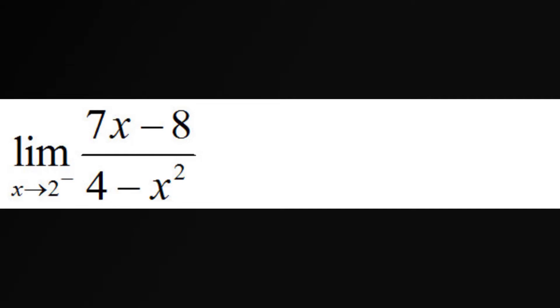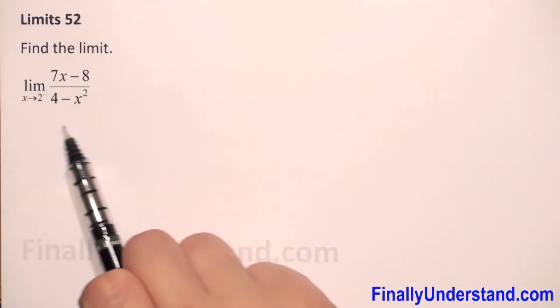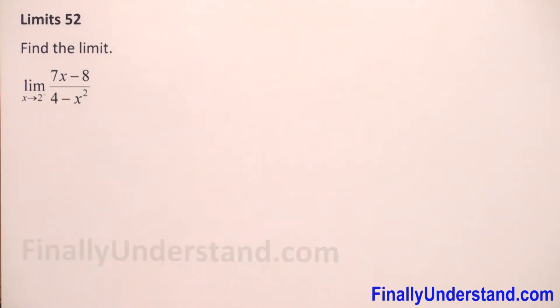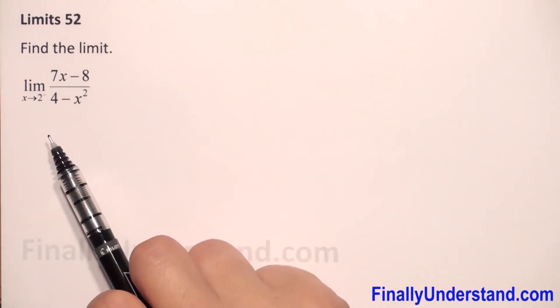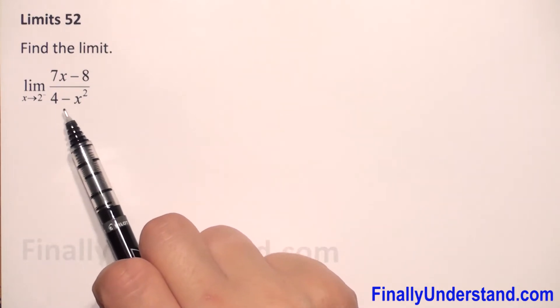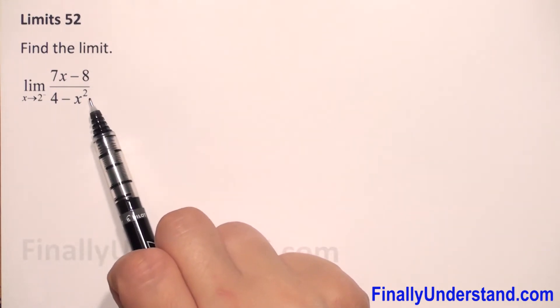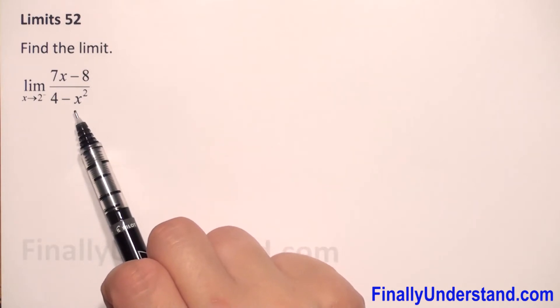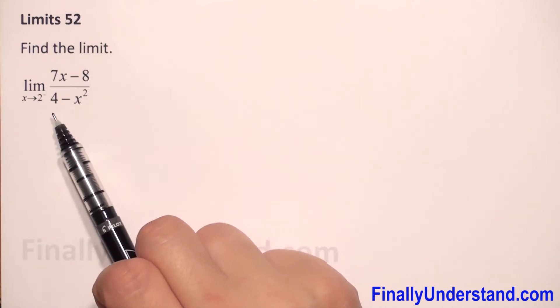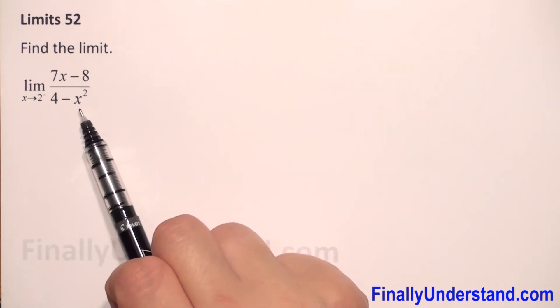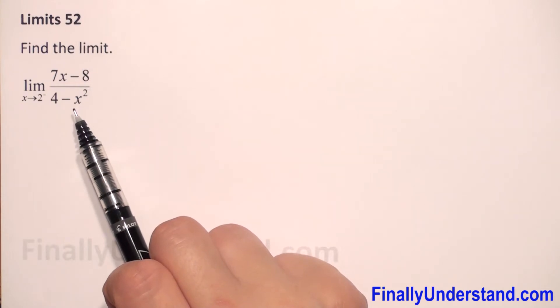We have to find the limit as x approaches 2 from the left of this expression. First we check if we can replace x by 2. So we will have 4 minus 2 squared — that is 4 minus 4, which is 0. We have 0 in the numerator, so we cannot do direct substitution.